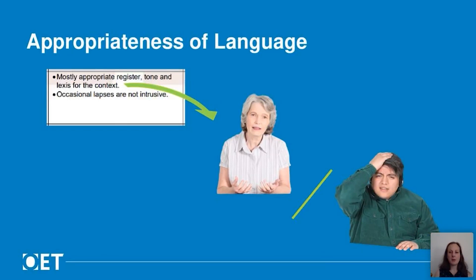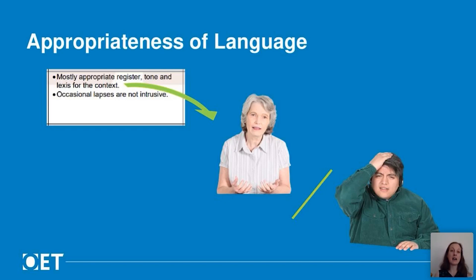In appropriateness of language, your level of formality, the tone of your voice, and the vocabulary you choose need to be mostly appropriate for the scenario. Formality may be different depending on whether you've met this patient before, the age of the patient, or their healthcare needs. Similarly, you need to use a different tone of voice when showing empathy or reassurance compared to when firmly advising the patient to do something. Your vocabulary choices are also linked to the function of what you are discussing — you'll use different words depending on whether you're advising, asking questions, or reassuring.